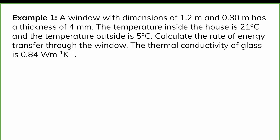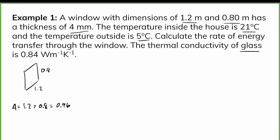For our first example, we have a window with dimensions 1.2 meters by 0.8 meters and a thickness of 4 millimeters. The temperature inside is 21°C and outside is 5°C, and the thermal conductivity of glass is 0.84. First, we calculate the area: 1.2 times 0.8 equals 0.96 m². The thickness converts to 0.004 meters, and the temperature difference is 21 minus 5, which is 16.